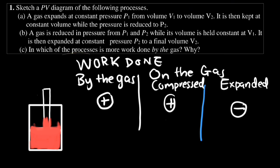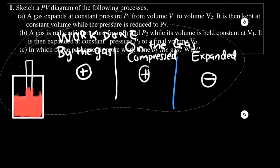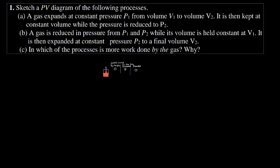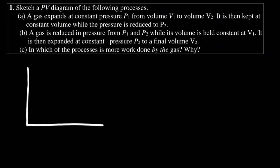Now let us see question number one. Sketch a PV diagram of the following processes. A gas expands at constant pressure P1 from volume 1 to volume 2. It is then kept at constant volume while the pressure is reduced to P2. They want us to sketch the pressure and volume diagram.